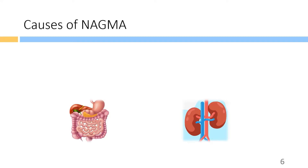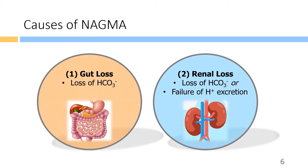The causes of NAGMA are easy to remember — there are only two main causes. One is gut loss through loss of bicarbonate from the gastrointestinal secretions. Two is renal losses, either a loss of bicarbonate or a failure of hydrogen ion excretion.